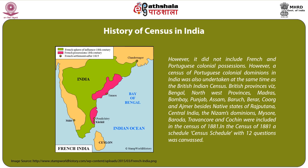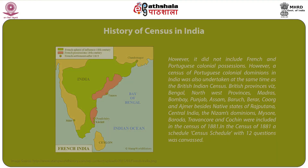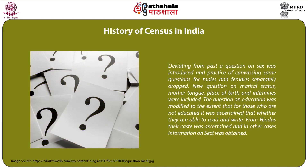In the census of 1881, a question on sex was introduced and the practice of canvassing the same questions separately for males and females was dropped. New questions on marital status, mother tongue, place of birth, and infirmities were included. The question on education was modified — for those not educated, it was ascertained whether they were able to read and write. From Hindus, their caste was ascertained, and in other cases, information on sect was obtained. The second continuous census was conducted from 26th February 1891, almost on the pattern of the 1881 census, with efforts for 100% coverage, and upper Burma, Kashmir, and Sikkim were also included.